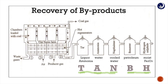Recovery of tar: the gas is passed through a tower in which liquor ammonia is sprayed. Tar and dust get dissolved and are collected in a tank below, and the tank is heated by steam coils to recover ammonia. Recovery of ammonia: the gases are then passed through another tower in which water is sprayed, and ammonia dissolves and is collected as NH₄OH. Recovery of naphthalene: the gases are passed through a tower where cooled water is sprayed, and naphthalene gets condensed and is recovered.